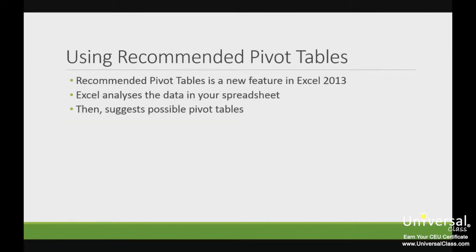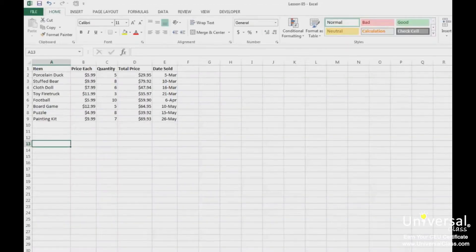Recommended pivot tables is a feature that is new to Excel 2013. With recommended pivot tables, Excel analyses the data that you have in your spreadsheet, then suggests possible pivot tables for you to use. This worksheet is simply a list of items, the price for each item, the quantity sold, the total price, and the date sold.